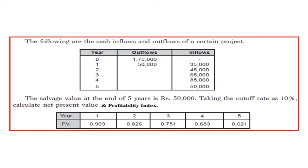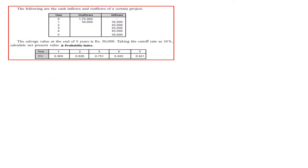We are asked to calculate the present value, net present value, and profitability index. The present value factors at 10 percent are given in the question: 0.909, 0.826, 0.751, 0.683, and 0.621. These can also be calculated by formula or found in present value tables available at the end of textbooks.